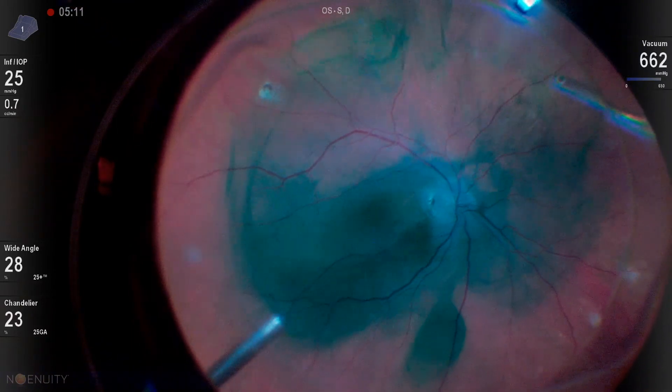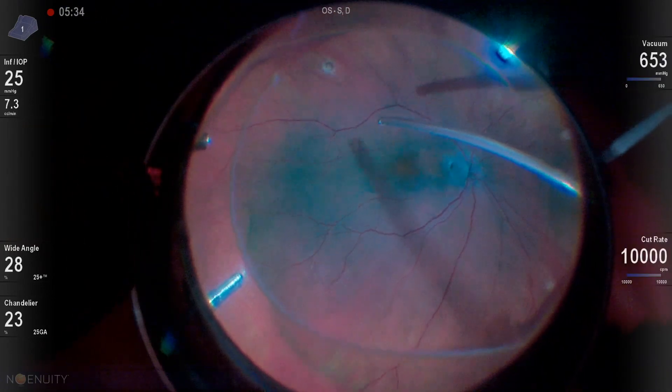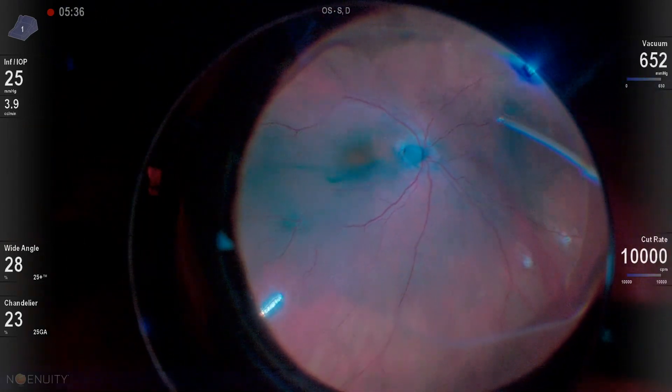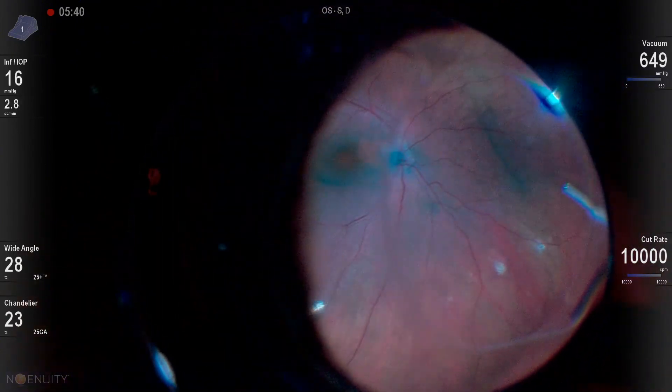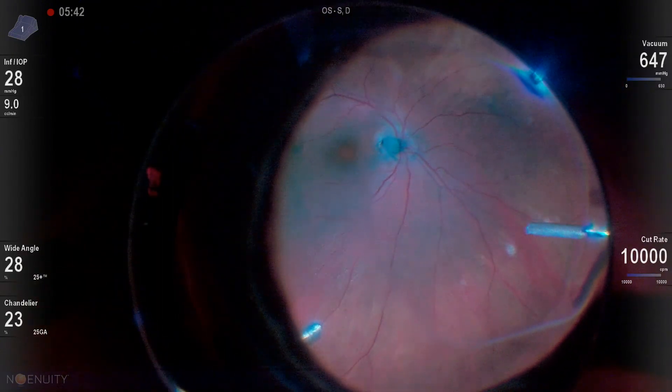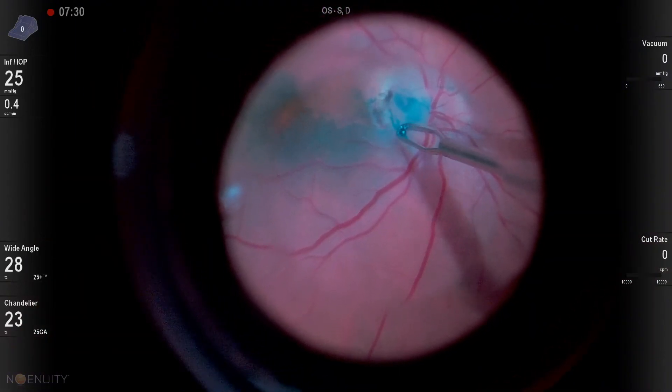Here you can see that up-and-out motion that I love to use to get the PVD with the cutter. Gets it up off of the nerve, and then I just use the fluid to help dissect the rest of the vitreous up and off by cutting. I don't have to go back down and pull excessively in many cases.